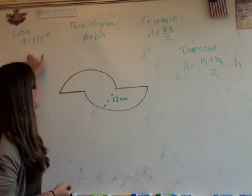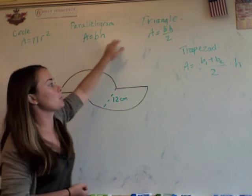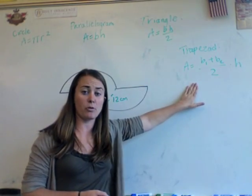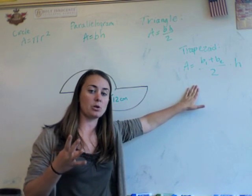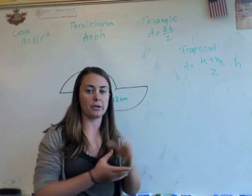So first we have our four area formulas for our circle, parallelogram, triangle, and trapezoid. It's good to have all four handy. So those are the four shapes you're looking for within those irregular figures.